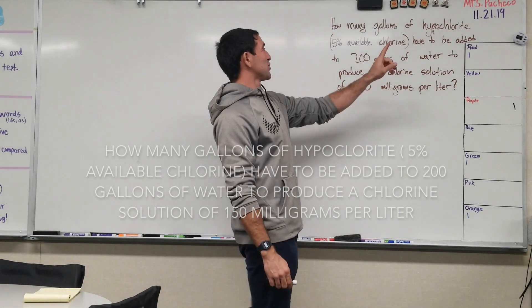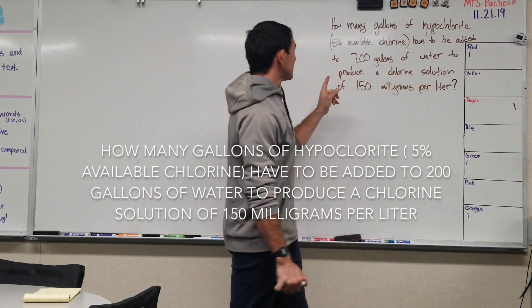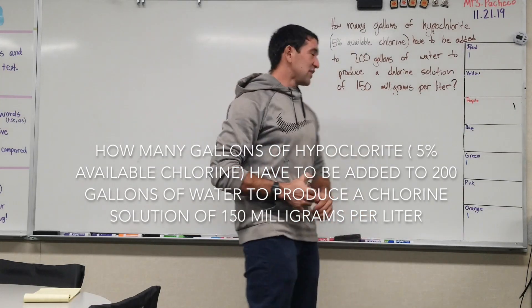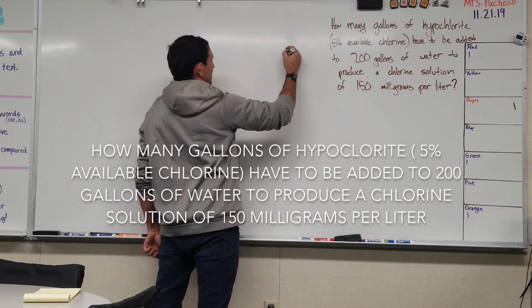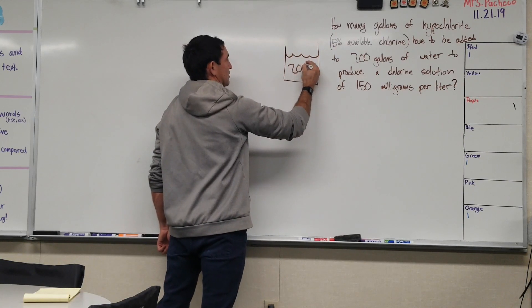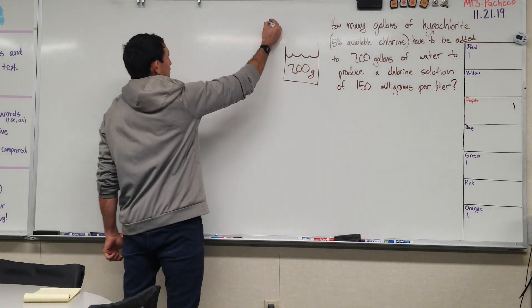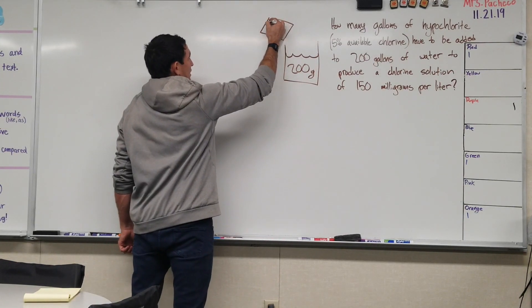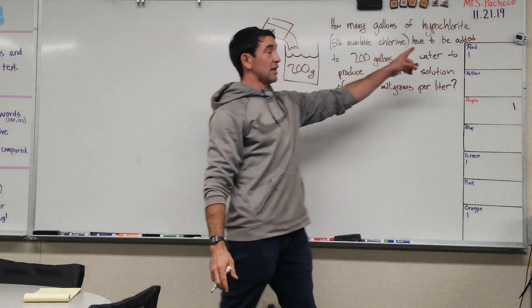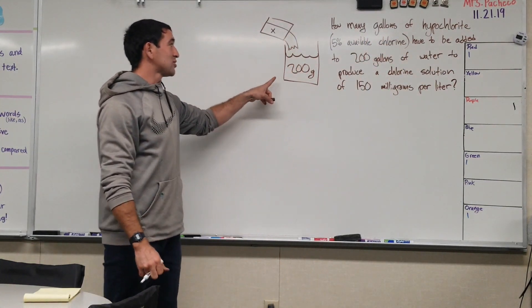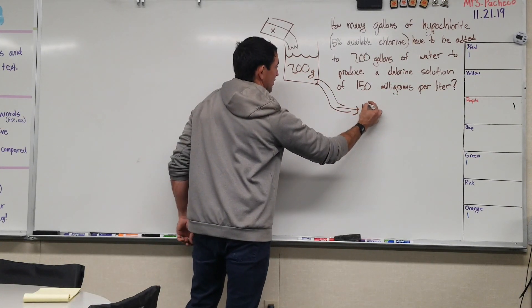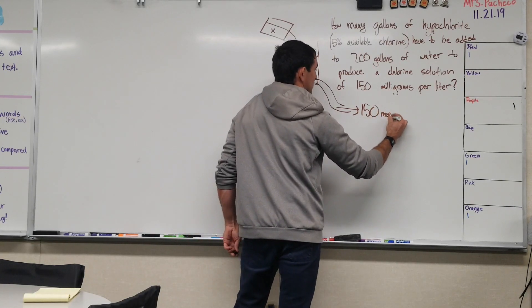So how many gallons of hypochlorite, 5% available chlorine, have to be added to 200 gallons of water to produce a chlorine solution of 150 milligrams per liter? So let me try to show what's going on here. Here you have 200 gallons of water. You have 200 gallons of water and you need to apply X amount of chlorine, well not chlorine, hypochlorite. You have to apply X amount of hypochlorite to this 200 gallons to give you a solution of 150 milligrams per liter.